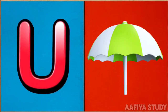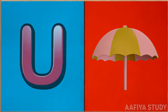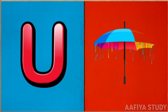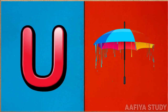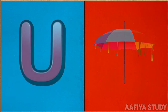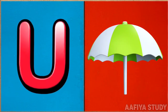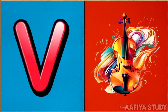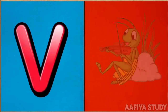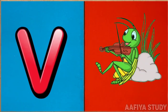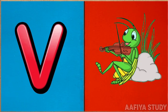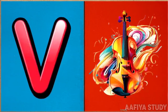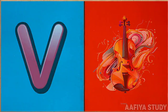U is for umbrella. U-umbrella, u-umbrella. V is for violin. W-w-violin. W-w-violin. V. Violin.